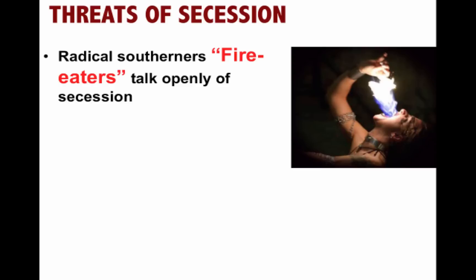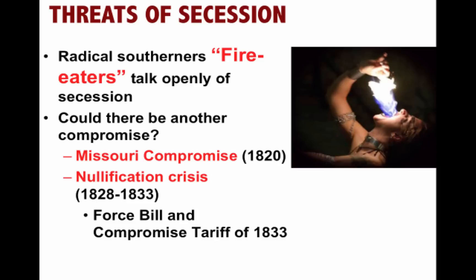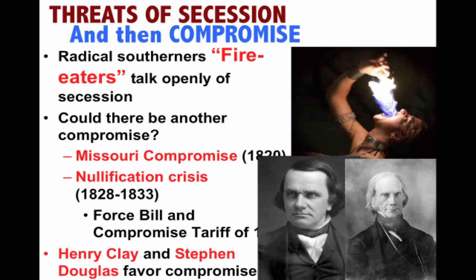The most radical Southerners are known as the Fire Eaters. They openly talk of leaving the Union and plan to meet in Nashville, Tennessee, to withdraw from the United States, because they see their political future as disappearing if California enters the Union. Could there be another compromise? We had compromised once with Missouri, and again with the nullification issue. Fortunately, you have two political leaders — Henry Clay, the great compromiser, and Stephen Douglas, a Northern Democrat — who calm the situation down with compromise.